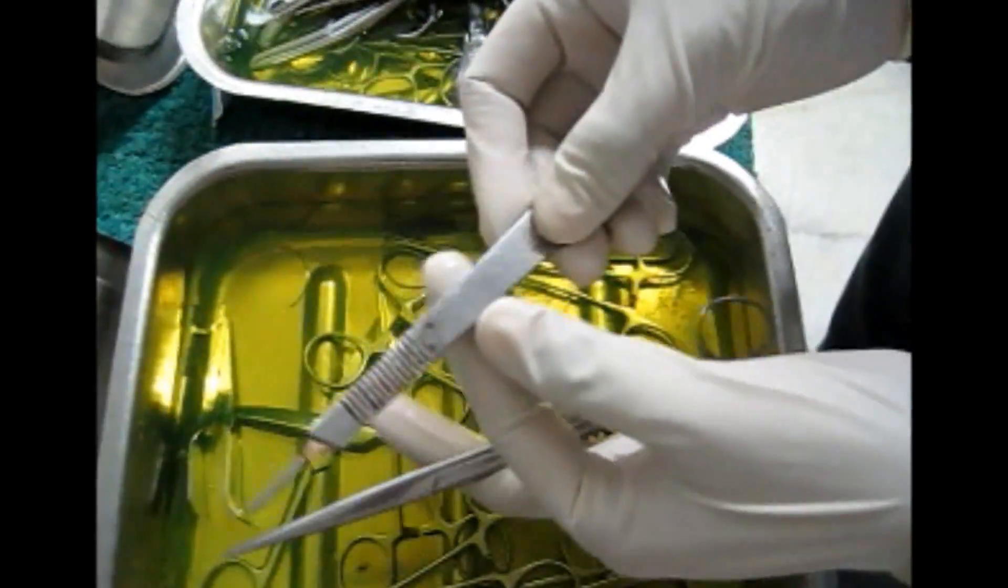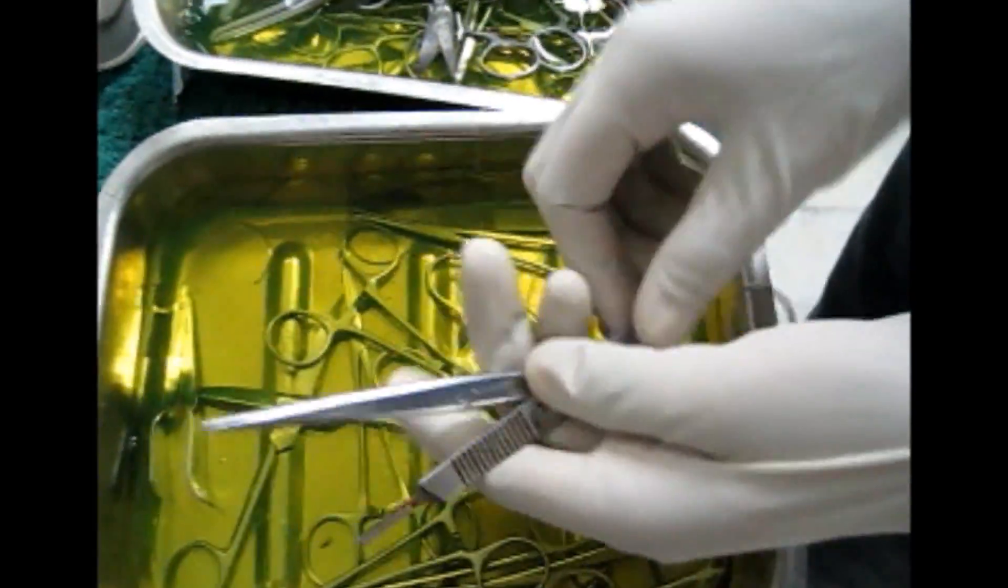This is the plain scissors. You can see very clearly. This is the BP handle.